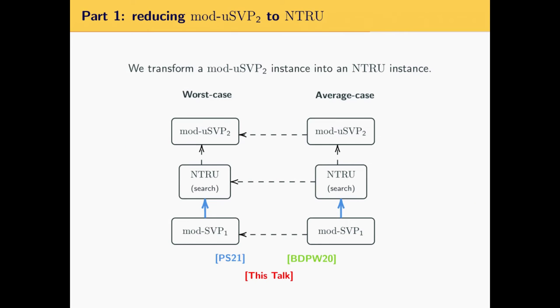As we said, NTRU is a particular case of module USVP in rank 2. Our first contribution consists in proving that it is indeed a generic case: NTRU is equivalent to module USVP in rank 2. This is done by giving an algorithm transforming any module USVP in rank 2 instance into a related NTRU instance, and a way to lift back the NTRU solution to an initial module USVP solution.